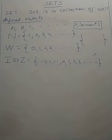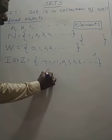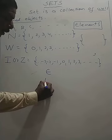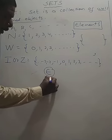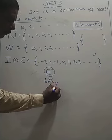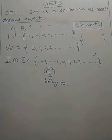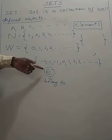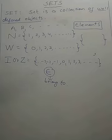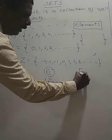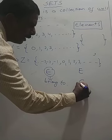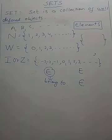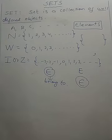Now, this symbol — written like a C with a horizontal line inserted — denotes 'belong to.' It is not the letter E; you simply write C and insert a horizontal line. This symbol is read as 'belong to.'